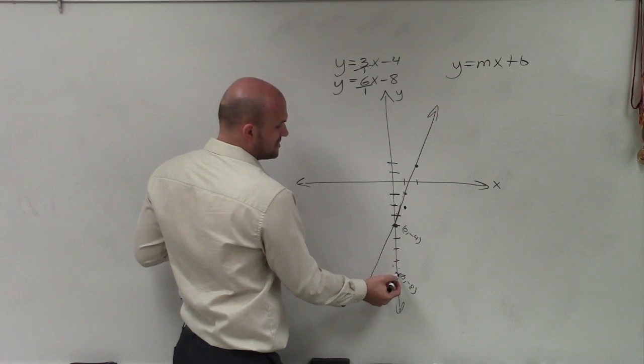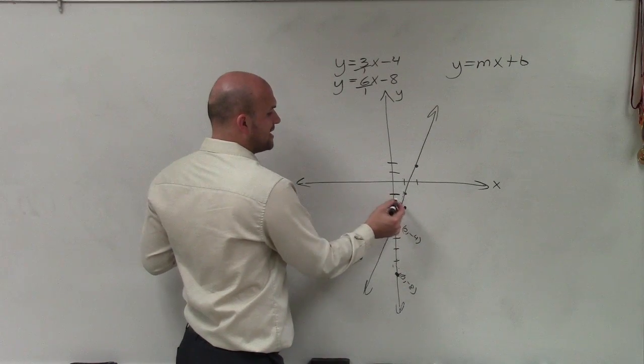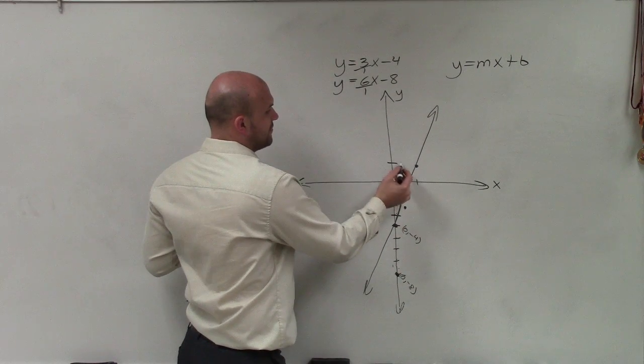Now, again, they still haven't crossed yet, right? And then I'm going to do 6 over 1 again. So 1, 2, 3, 4, 5, 6.